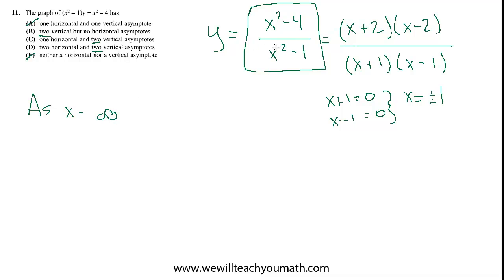As x approaches infinity, x squared is going to get really large. The minus 4 in the numerator is relatively insignificant compared to x squared, because x squared gets astronomically huge. Similarly in the denominator, minus 1 plays a negligible role and x squared dominates. So we look at the highest order terms in numerator and denominator — both are x squared — and we get y trending toward x squared over x squared, which equals 1.